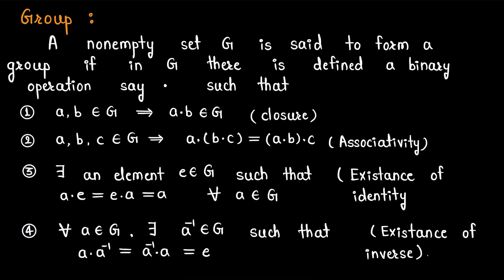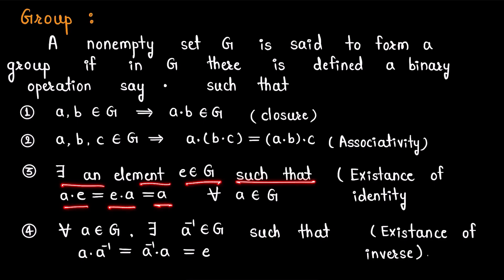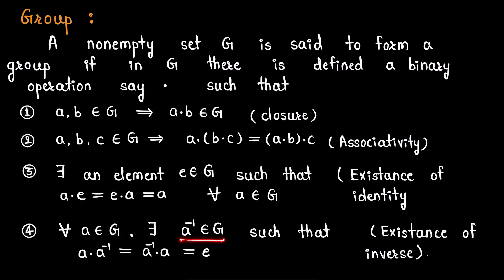Third, there exists an element e in G such that a dot e equals e dot a equals a for all a in G — we call this element e the identity and this property the existence of identity. Fourth, for all elements a in G, there exists an element a-inverse in G such that a dot a-inverse equals a-inverse dot a equals e — we call this property the existence of inverse.